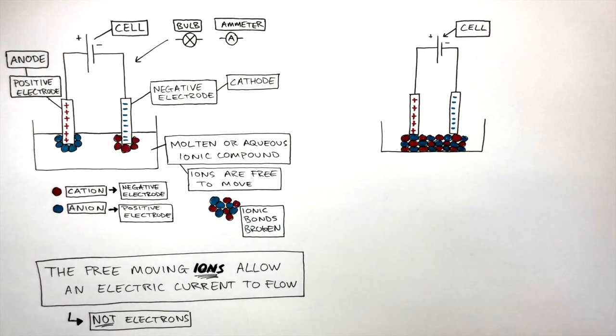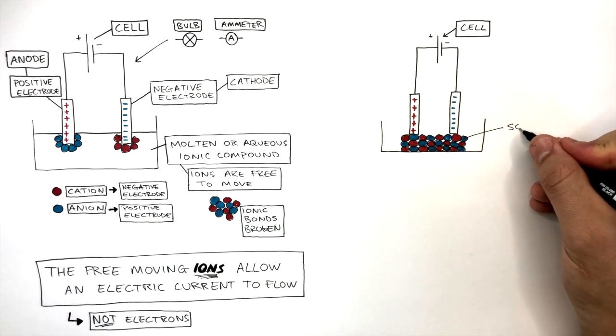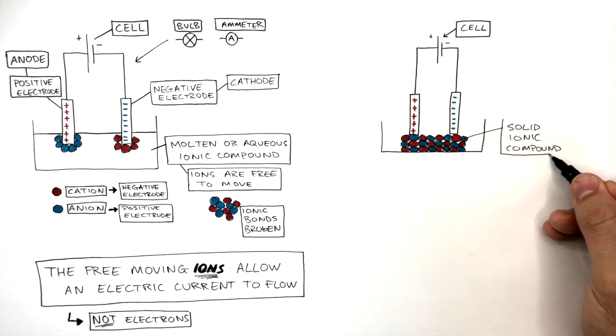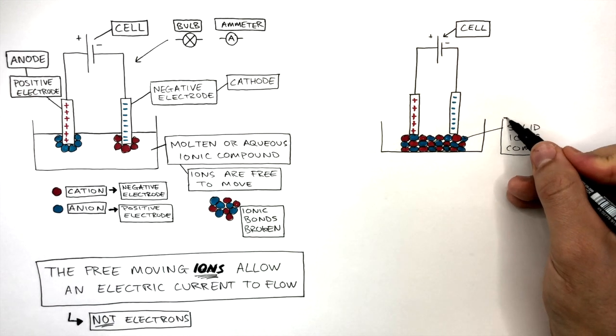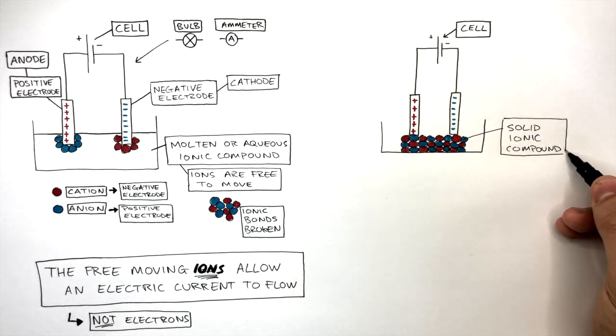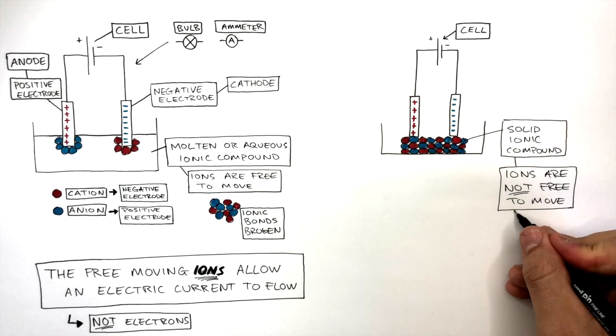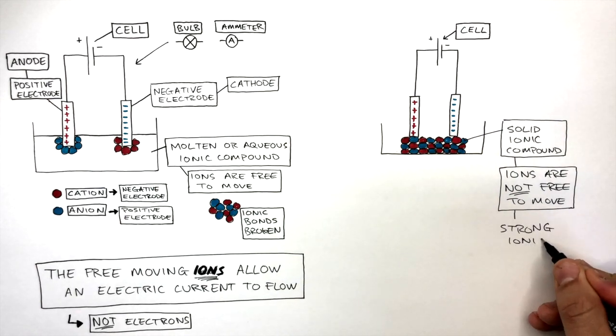This shows the same apparatus set up with a solid ionic compound in the container. Notice how the solid ionic compound does not take the shape of the container. This is because the ions are not free to move. They are held in place by strong ionic bonds.